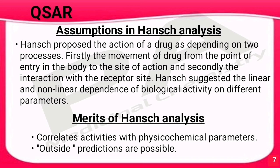Hansch proposed that drug action depends on two processes: the movement of the drug from the point of entry in the body to the site of action, and the interaction with the receptor site. He suggested linear and non-linear dependence of biological activity on different parameters.